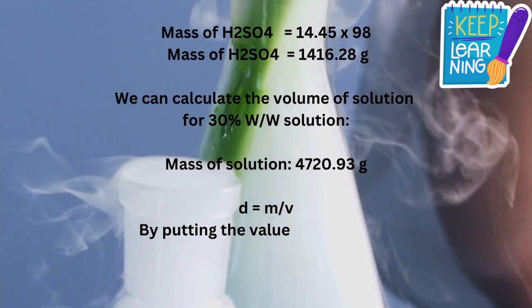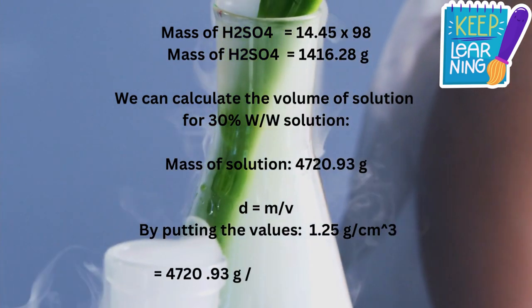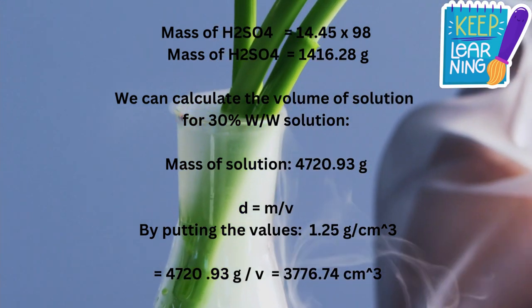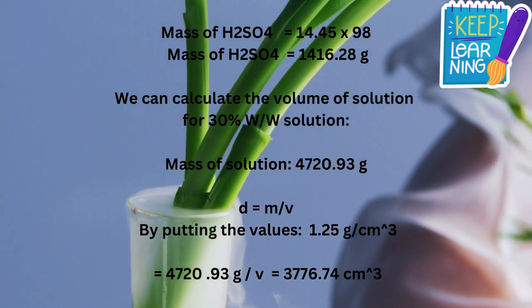Density formula: D = M/V. By putting the values, 1.25 grams per cubic centimeter equals 4720.93 grams divided by volume. Volume equals 3776.74 cubic centimeters.